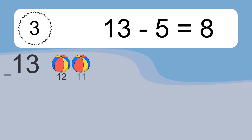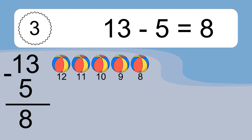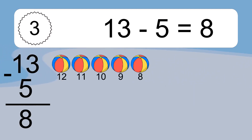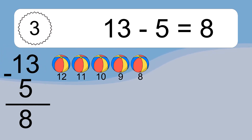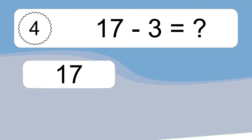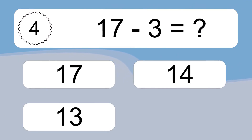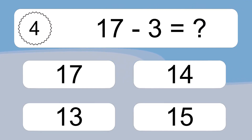13 minus 5 equals 8. Let's count it: 12, 11, 10, 9, 8. 17 minus 3 equals what?